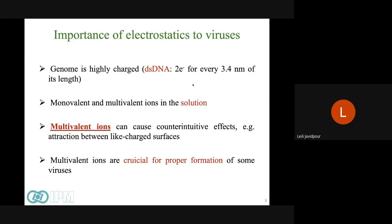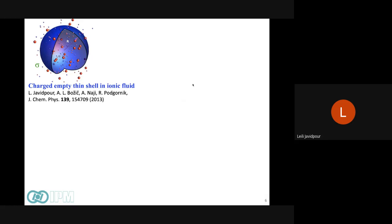Actually, double-stranded DNA has two elementary charges for every base pair, which is about 3.4 nanometers of its length. And in the solution, we have both monovalent and multivalent ions. And in addition, it has been shown that the presence of multivalent ions for each virus are crucial for its proper formation. And as Ali said yesterday, multivalent ions can cause attraction between same-sign charged surfaces. So, to study the effect of multivalent ions on viral capsid stability or viral shell stability, we have used three different models.